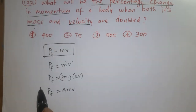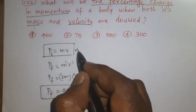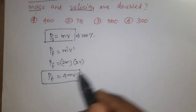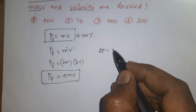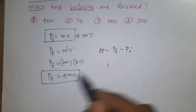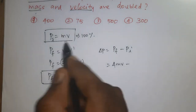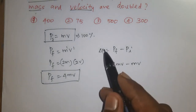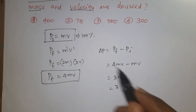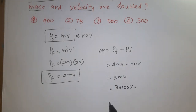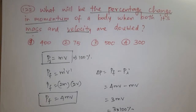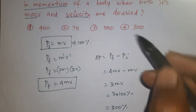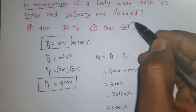Initial momentum PI is taken as 100%. Change in momentum ΔP = PF − PI = 4MV − MV = 3MV. Since PI corresponds to 100%, 3MV corresponds to 300%. The question asks for percentage change in momentum. The answer is 300%. The correct option is the fourth one.